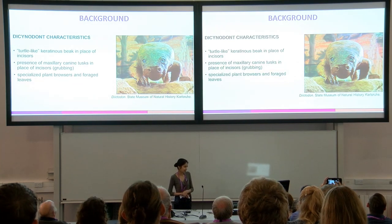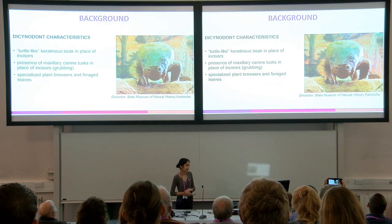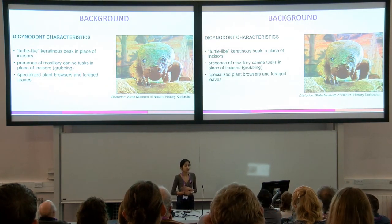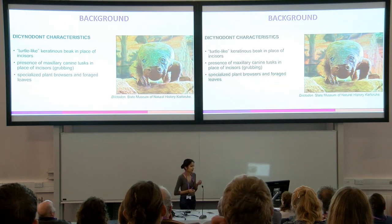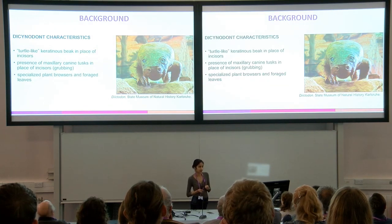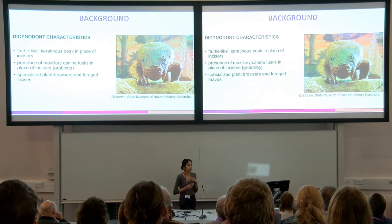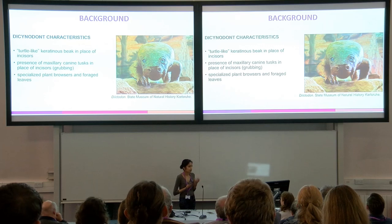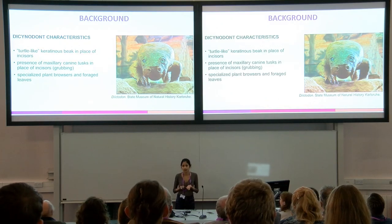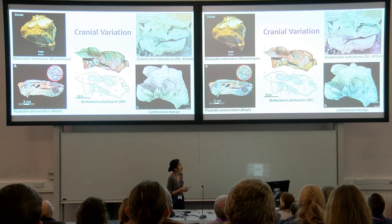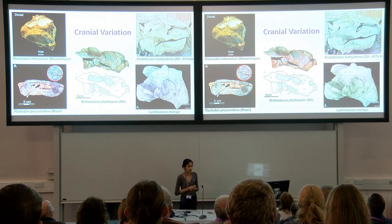Cranial characteristics of dicynodonts include a turtle-like keratinous beak in place of incisors that covers the masticatory region, and in some species the presence of maxillary tusks, which could be used for grubbing. Cranial anatomy suggests that dicynodonts were plant browsers that foraged leaves, hard plant matter, and perhaps even small invertebrates.